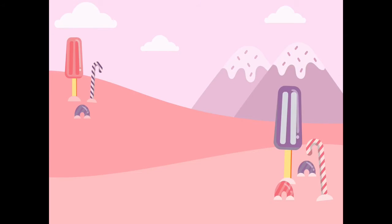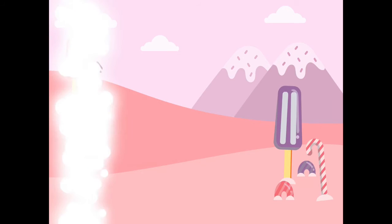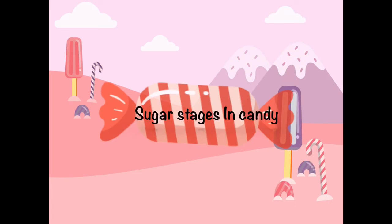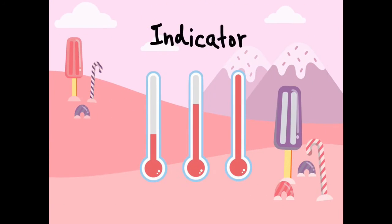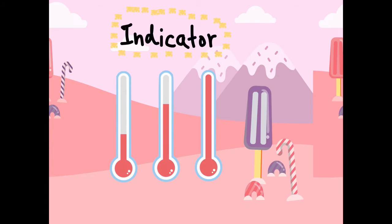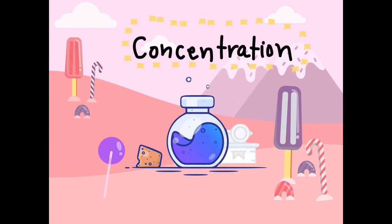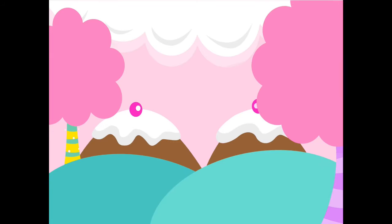Sugar stages in candy science. Temperature is an indicator of the sugar concentration of the liquid. As temperature increases, the saturation of the solution increases through water evaporation — this is the basis for the different sugar stages.